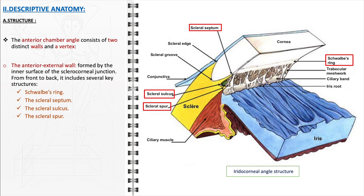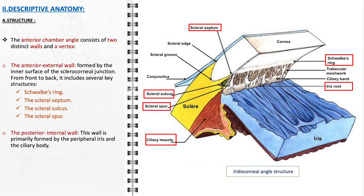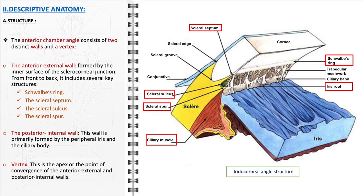The scleral spur is a prominent ridge of scleral tissue serving as an attachment point for the trabecular meshwork and the ciliary muscle. The posterior internal wall is primarily constituted by the peripheral part of the iris and the ciliary body, essential in maintaining the angle's structural integrity and pivotal in the production and regulation of aqueous humor. The peripheral iris helps to form the posterior boundary of the angle. Lastly, the vertex is the apex or convergence point of the anterior external and posterior internal walls, representing a critical landmark in the eye.